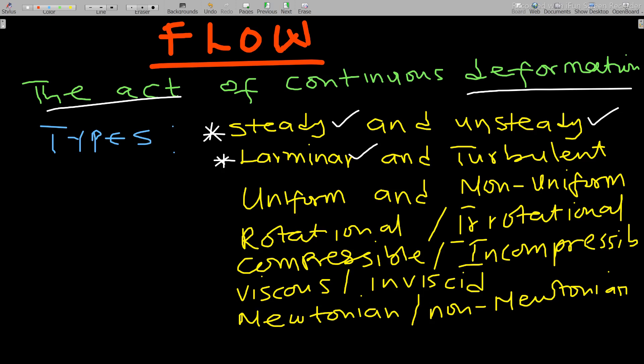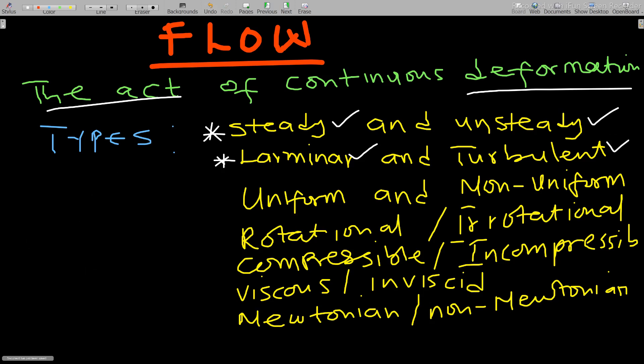For turbulent flow, the paths of the fluid particles cross each other. For example, one particle may be moving in one direction and another particle crossing in a different direction. That crossing behavior is what characterizes turbulent flow.